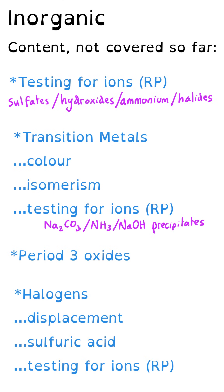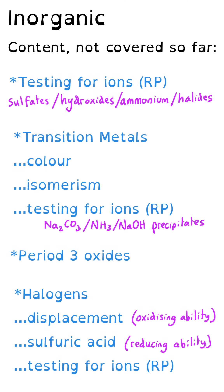There hasn't been very much at all about period 3 oxides so far, so that's my third inorganic chemistry prediction. And last of all, there hasn't been very much about the halogens topic. Given the practical focus, this could be the displacement reactions proving oxidizing ability, the reactions with concentrated sulfuric acid proving reducing ability patterns, or it could also come up in the testing for ions required practical.